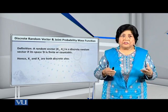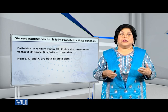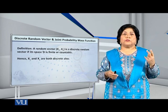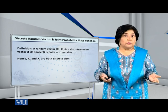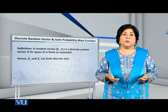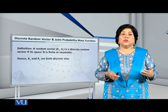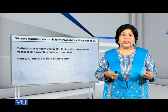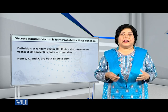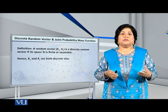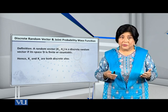If we have a discrete random vector consisting of only two discrete random variables, X1 and X2, then what will be the joint probability mass function of this random vector?